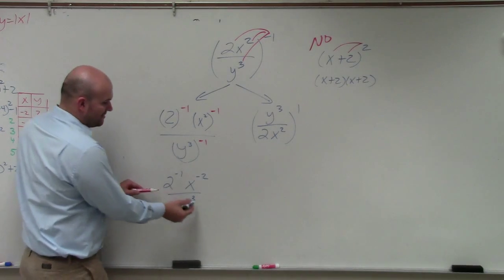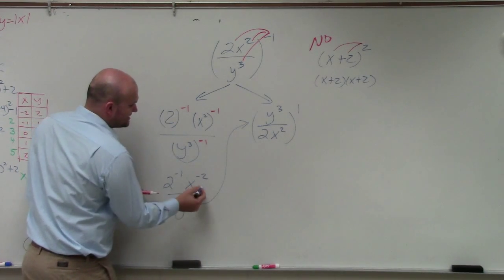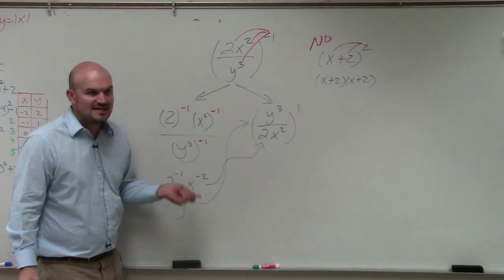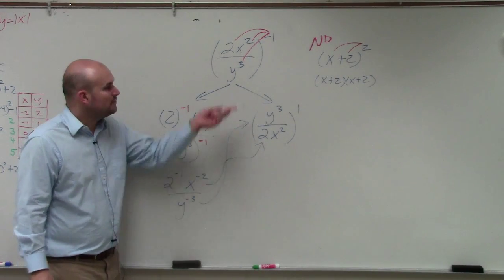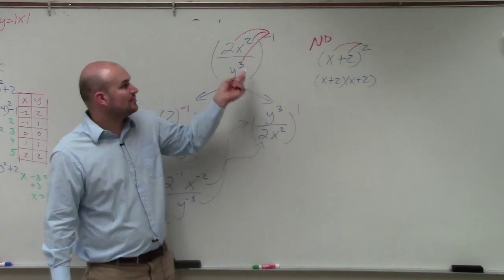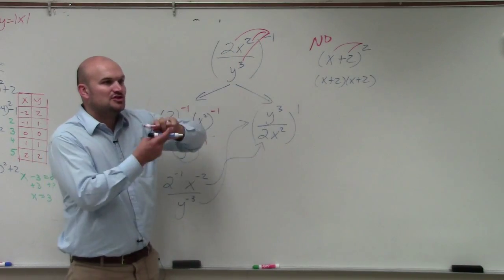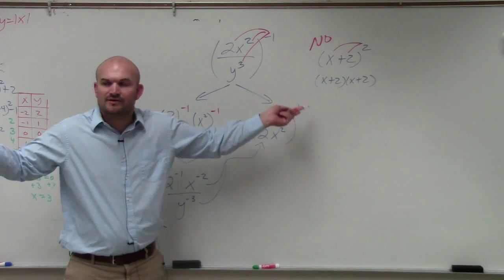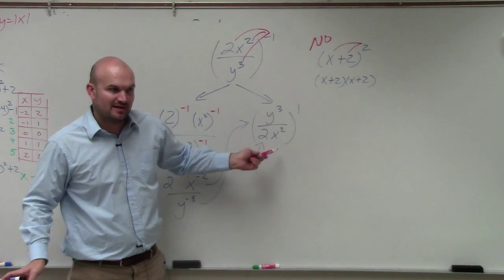And do you guys see how this would give you the exact same answers? Do you guys see how they're exact same answers? So if you have a fraction raised to a negative power, just reciprocate it, and then you could apply the power. But in this case, the power is 1, so we don't even have to do anything. We just had to reciprocate it.